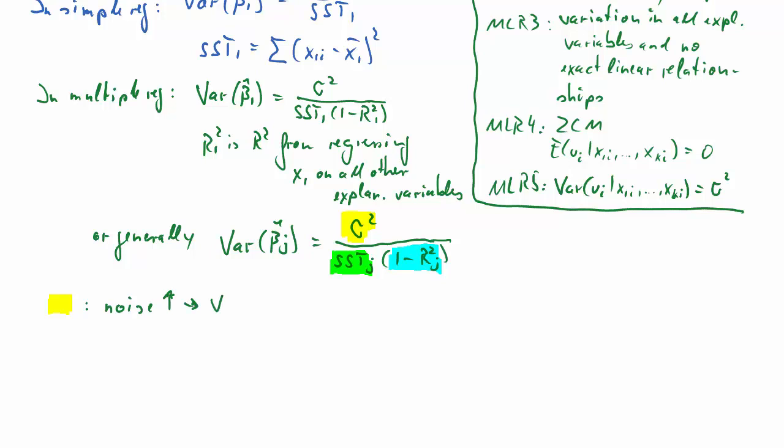It describes how much noise there is in our regression. And as that noise increases, the variance of beta j hat will increase. This is, in fact, one reason why you should be including all relevant explanatory variables. Because by including them, you will reduce the variance of the error term and therefore increase the precision of your estimated coefficients.